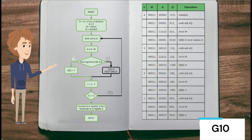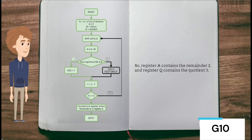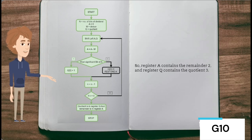The counter N is decremented. Since the value of N becomes 0, we exit the loop. Finally, register Q contains the quotient and register A contains the remainder. The quotient in binary is 0011, which equals 3 in decimal, while the remainder is 0010, which is 2 in decimal.